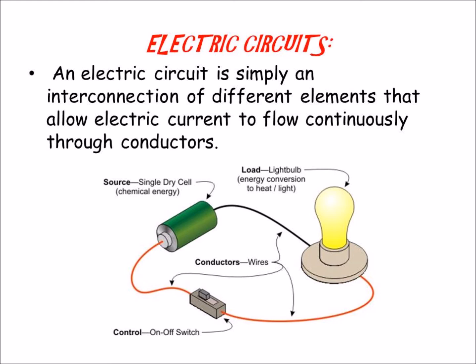Electric circuits consist of different elements that allow electric current to flow continuously through conductors. Normally we have a source of power — in this case a battery. We also need a load that shows that the circuit is working; it can be a bulb, a motor, or a buzzer. We also have a control — in this case it can be a switch, on or off. All these elements are connected through conductors. The wires are made of metal inside, and metal is an electrical conductor. They are covered with plastic because plastic is an electrical insulator.